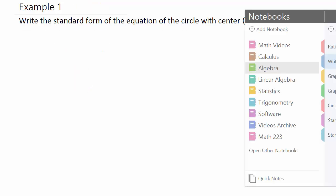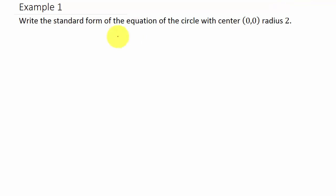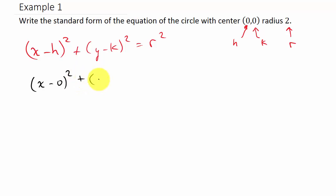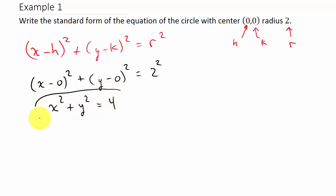Let's look at our first example. Write the standard form of the equation of the circle with center (0, 0) and radius 2. We can see that h is 0, k is 0, and r is 2. Writing the equation: x minus h squared plus y minus k squared equals r squared. Plugging in zero for h, zero for k, and two for r gives us: x minus 0 squared plus y minus 0 squared equals 2 squared, which simplifies to x squared plus y squared equals 4. And there's your equation.